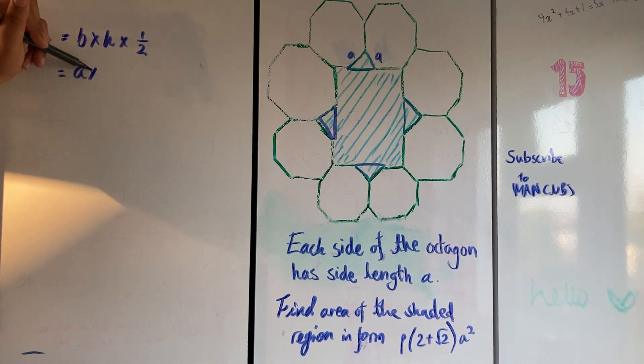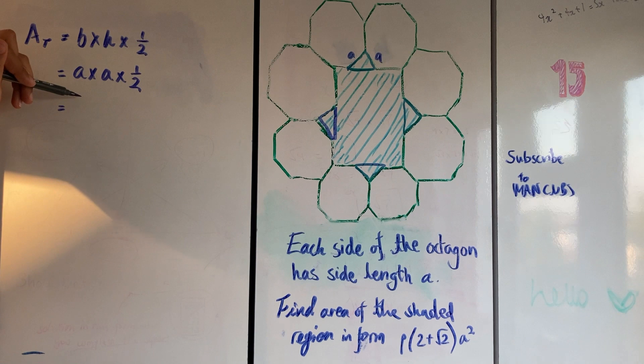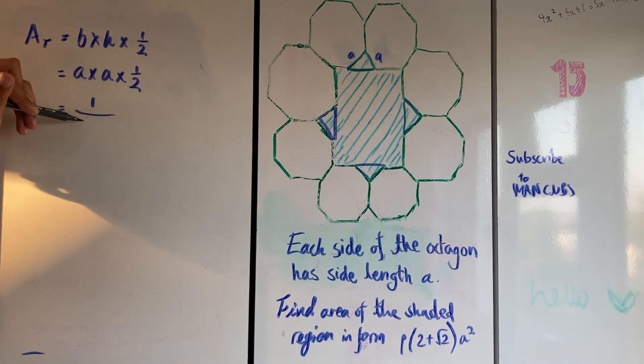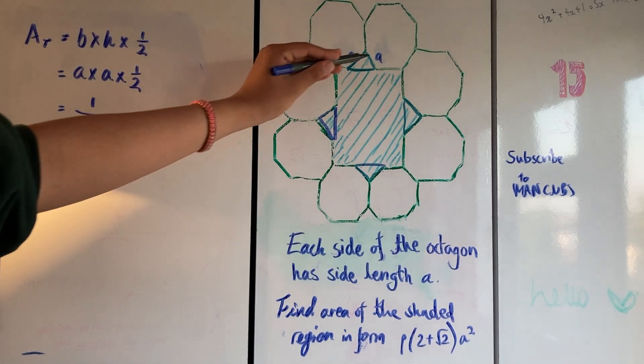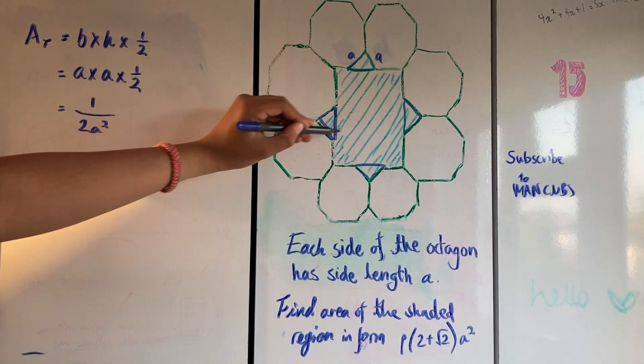So the area of the triangle is going to be a times a times a half. This isn't in a very nice form so we're going to simplify a bit. A times a is a squared, and we can multiply that by 2 to get 2a squared and put it all over 1. So a²/2 is the area of that small triangle.